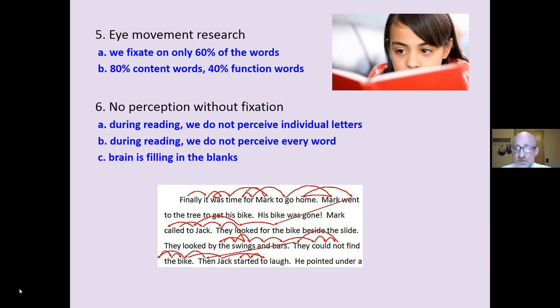There is no perception without fixation. We do not perceive things unless our eyeball stops on it. If you notice when you look at a picture, your eye is constantly moving around. A series of different fixations. During reading, we do not perceive individual letters. During reading, we do not perceive every word. Our brain is stopping on the salient words and filling in the blanks.